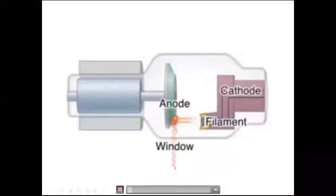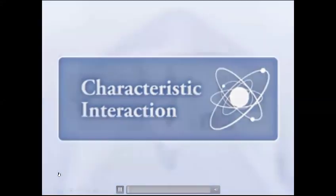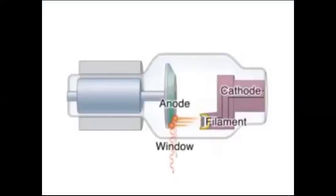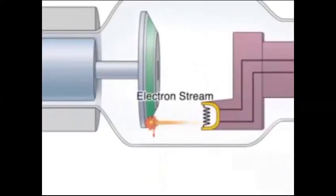X-ray tubes produce X-ray photons by sending high-speed electrons from the cathode to the anode. As the electrons hit a tungsten anode, their kinetic energy is converted to X-ray energy.